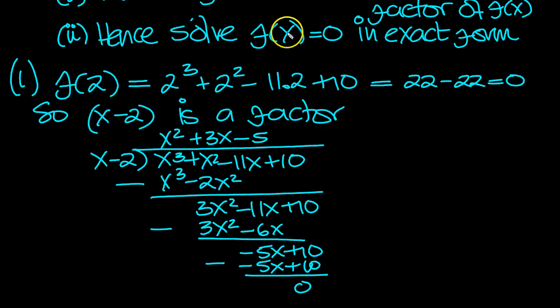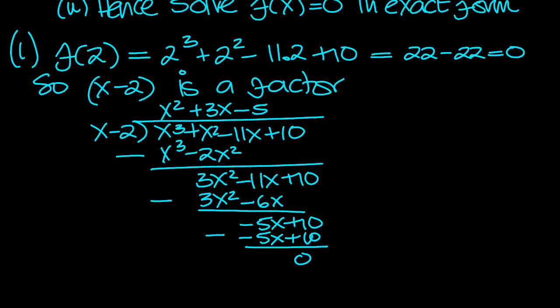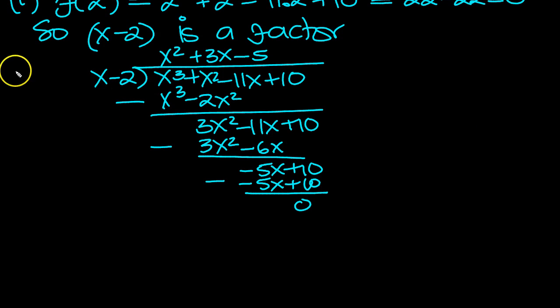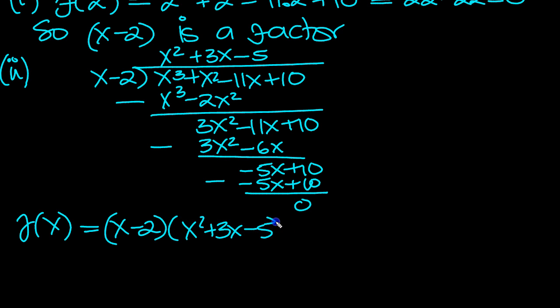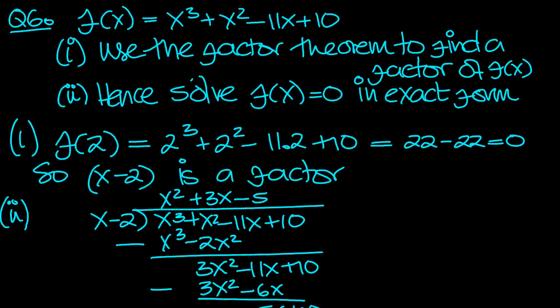Okay, so hence solve this in exact form we're doing now. So part 2. So f of x then must equal x minus 2 times x squared plus 3x minus 5. Here's a quadratic.